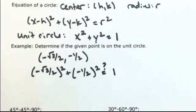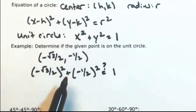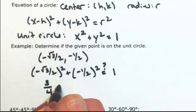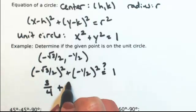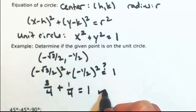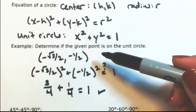Squaring both terms, make sure you square the negative also, so this becomes positive 3 fourths. The second one becomes positive 1 fourth, and in fact we get 1. So that means this point is on the unit circle.